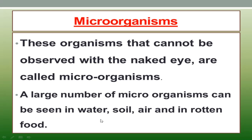In rotten food also, there are a large number of microorganisms. So under this topic, we have learned that microorganisms are organisms that cannot be observed with the naked eye, and that they can be found in water, soil, air, and rotten food.